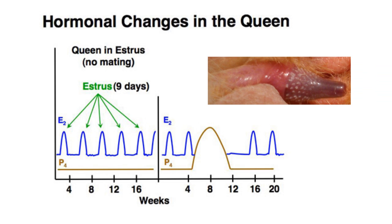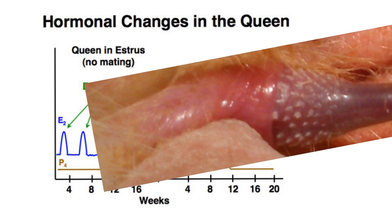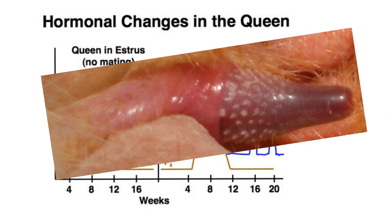One reason mating is necessary is shown in this figure of the cat's penis, which has keratin barbs or spikes. These stimulate the anterior vagina, which sends messages to the brain, as we'll see in the following.